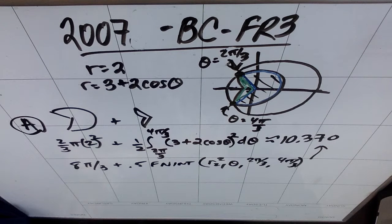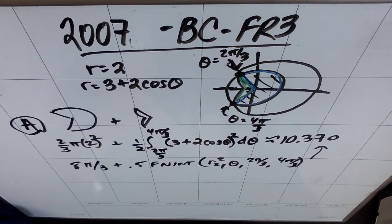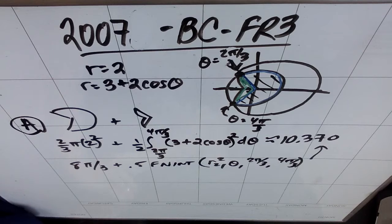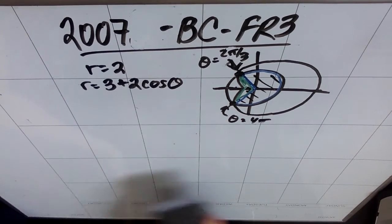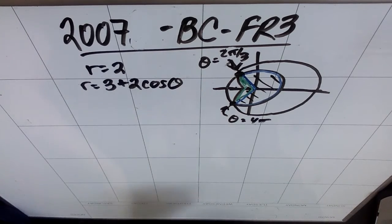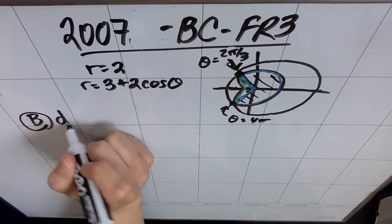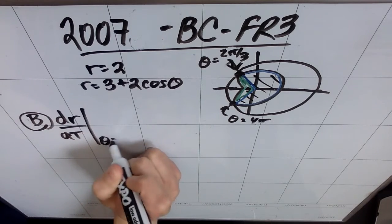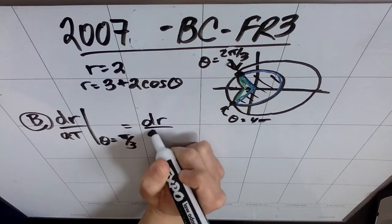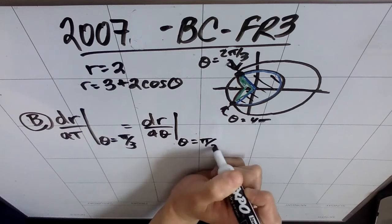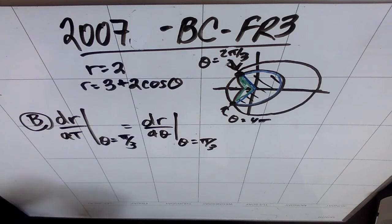Part B: a particle moving with non-zero velocity along the polar curve R equals 3 plus 2 cosine theta has position (x(t), y(t)) at time t, with theta equals 0 when t equals 0. The particle moves along the curve such that dr/dt equals dr/dθ. Find the value of dr/dt at theta equals pi over 3 and interpret your answer in terms of the motion of the particle. Since dr/dt equals dr/dθ, my calculator can find dr/dθ in polar mode.